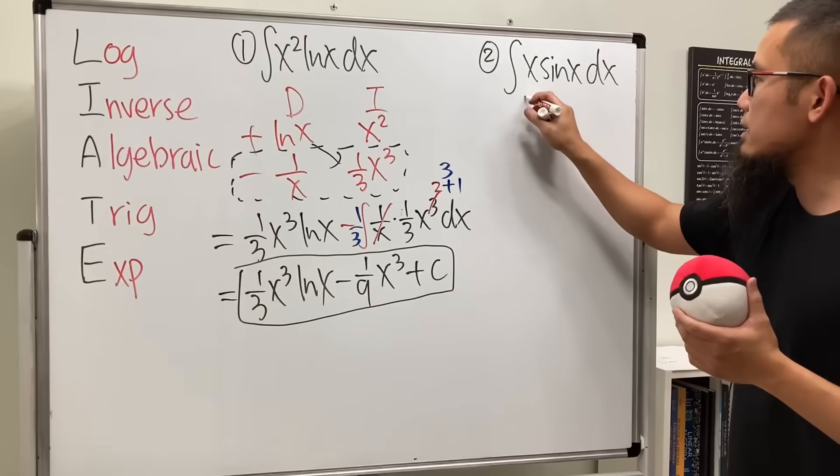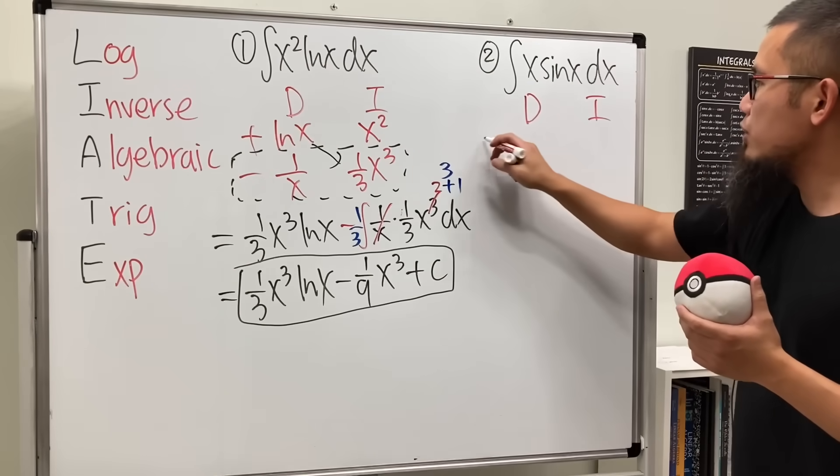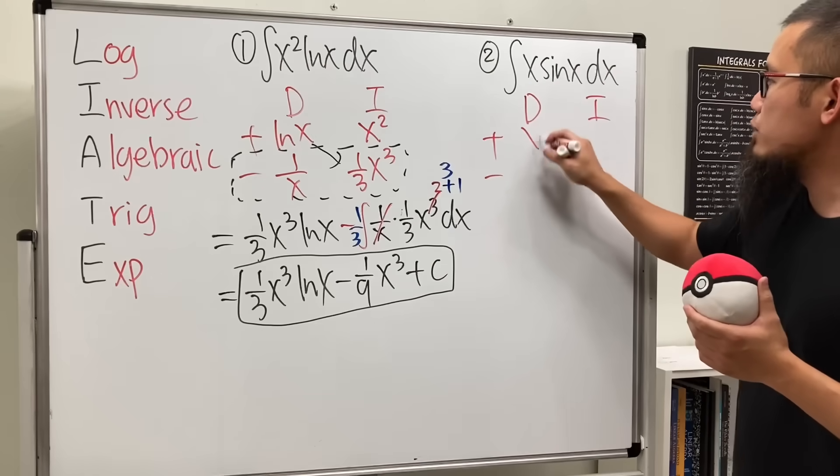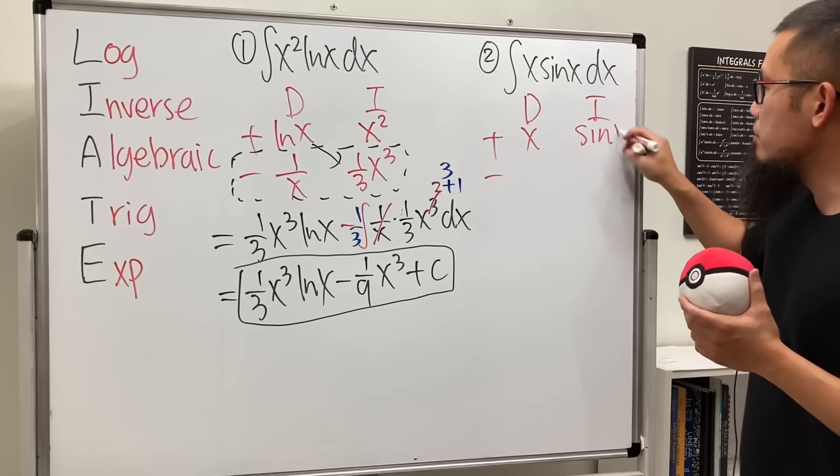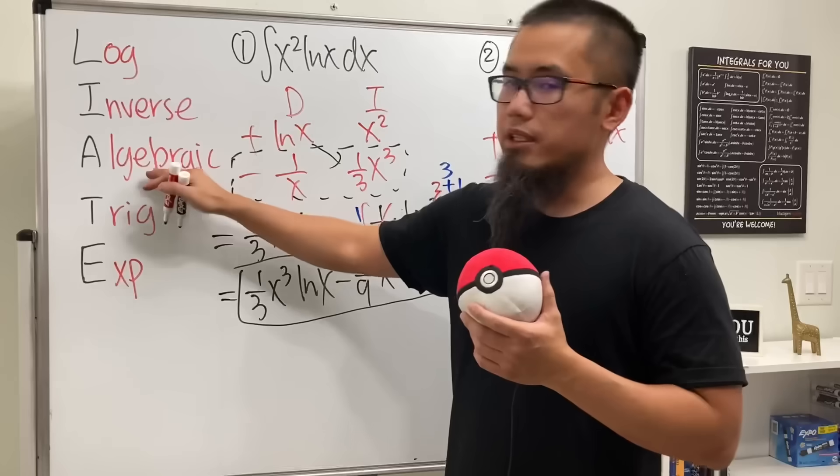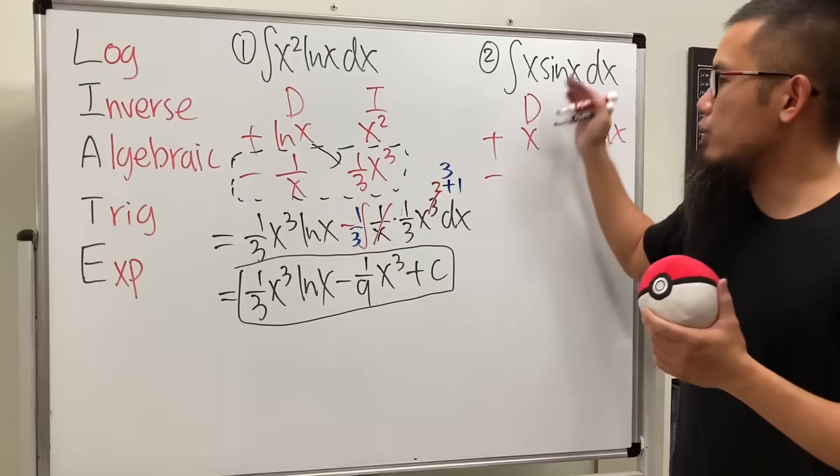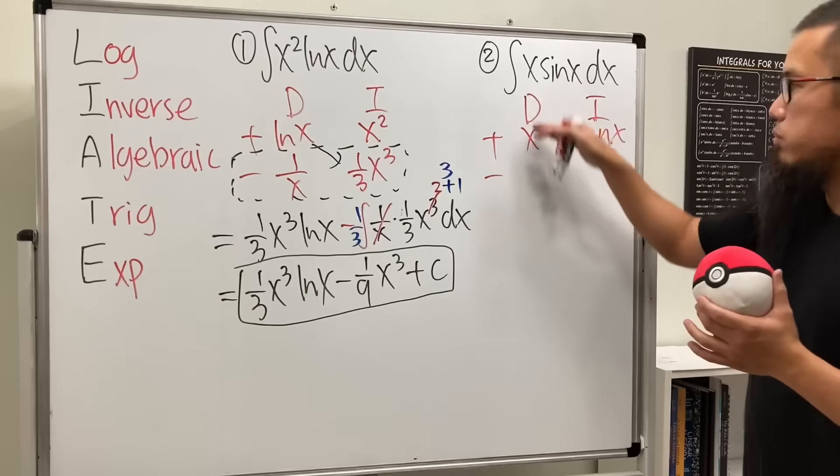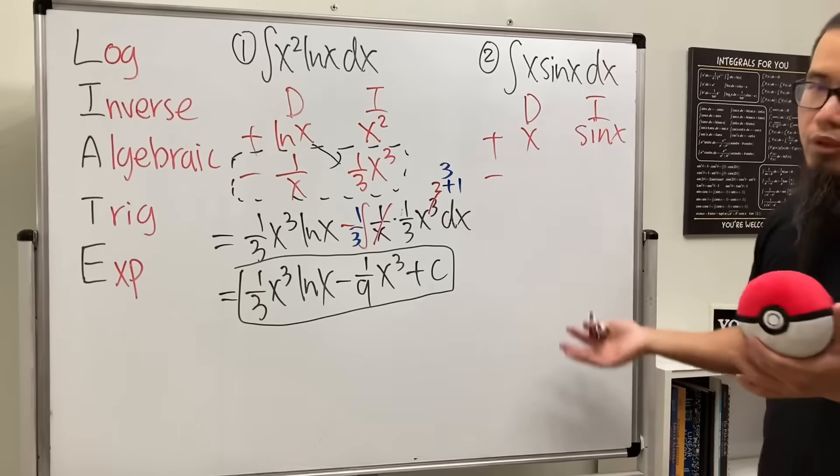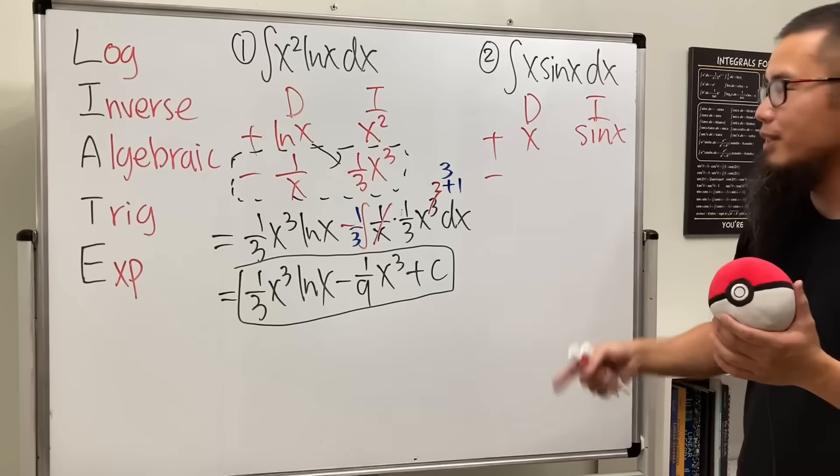So we'll choose the x to be differentiated. So let's just go ahead and put that down. Put down the x right here and put down the sine x right here. x is algebraic, x to some power, and trig is down below. So do this. And of course, you all know the integration by parts with the DI method, the DI setup.